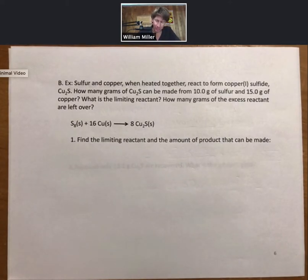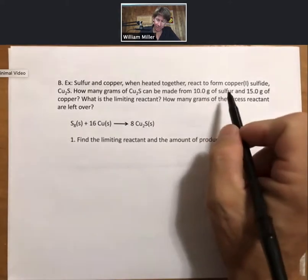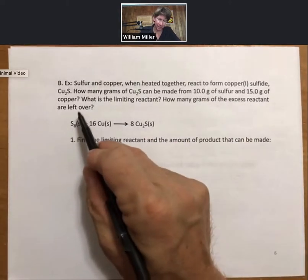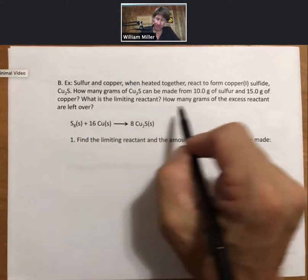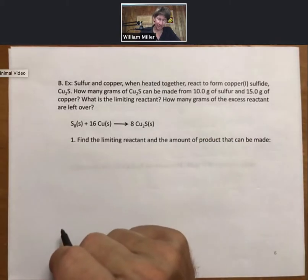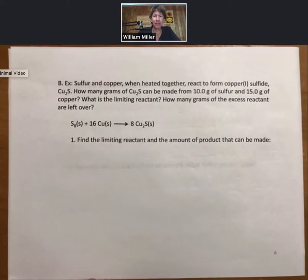This example has sulfur and copper with our grams of sulfur and grams of copper. It asks what is the limiting reactant and how many grams of the excess reactant are left over. However, it has the balanced chemical reaction and so this is, again, a very typical type of quiz or exam problem. You'll find some of these on the homework as well.